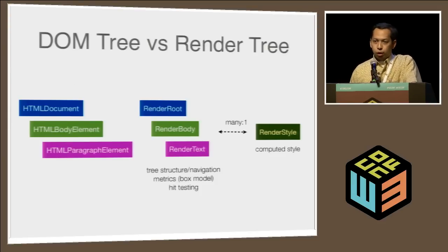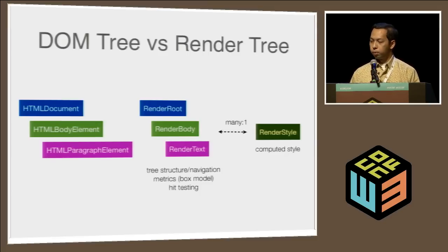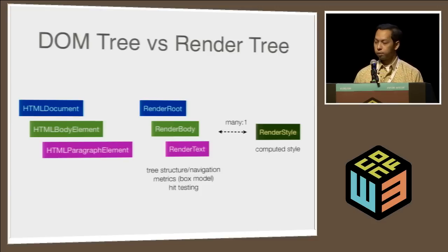There's also something called the render tree — this is WebKit terminology, but Firefox has the same thing under a different name. Every render box usually maps to a particular DOM node, and the render tree implements the full CSS box model, handling everything from hit testing, all the metrics, sizing, position, et cetera. If you specify style that's been resolved to a particular element, there will be a corresponding render style, which roughly matches what you'd expect from get computed style on a DOM element.